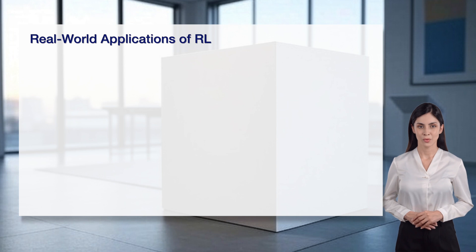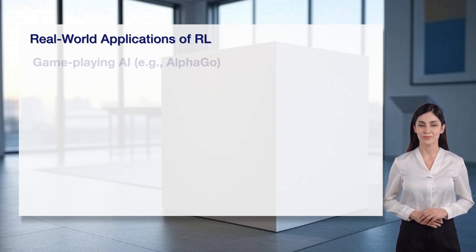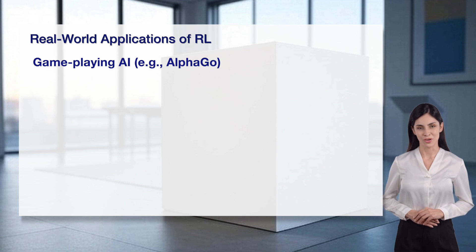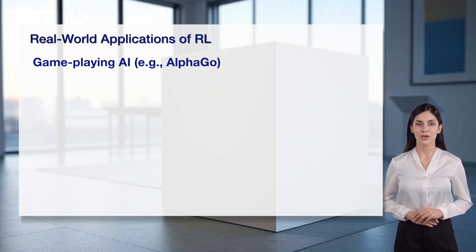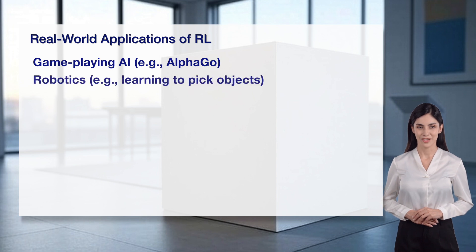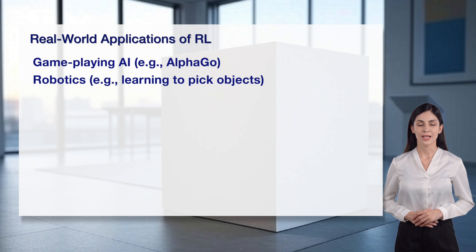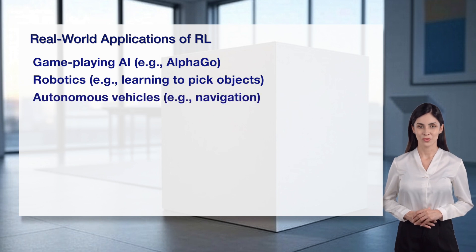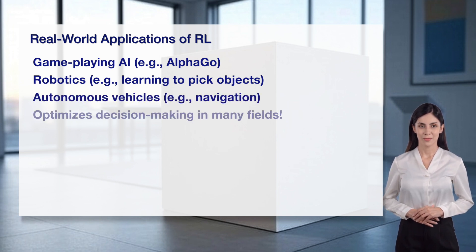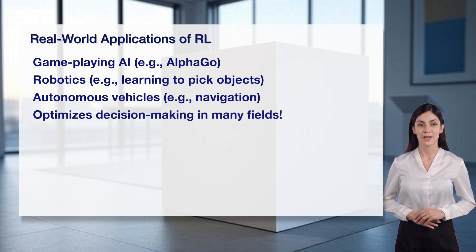Reinforcement learning powers many real-world applications across various fields. Game-playing AI, like AlphaGo, uses RL to master games like Go, beating world champions. In robotics, RL helps robots learn tasks like picking objects through trial and error. Autonomous vehicles use RL to navigate traffic, optimizing their driving decisions. RL is a versatile tool that optimizes decision-making in industries from gaming to transportation.